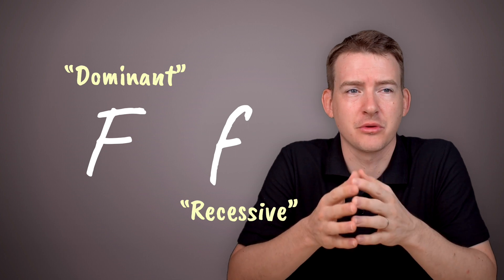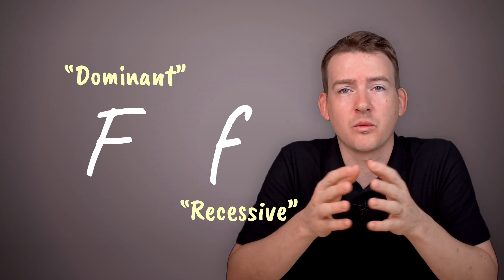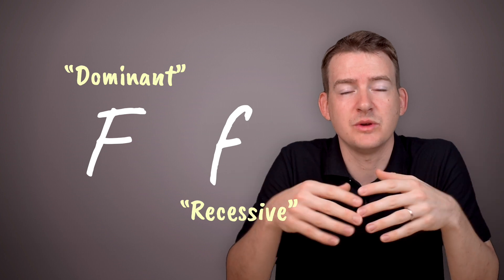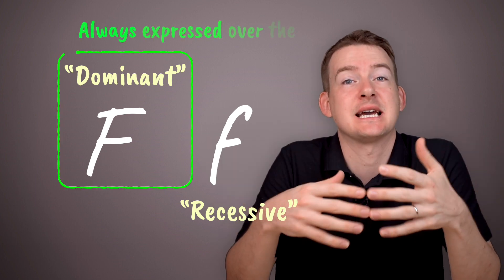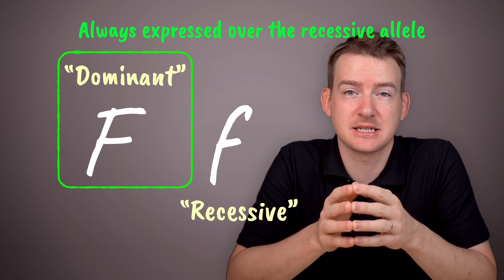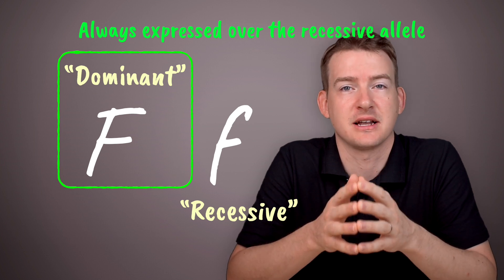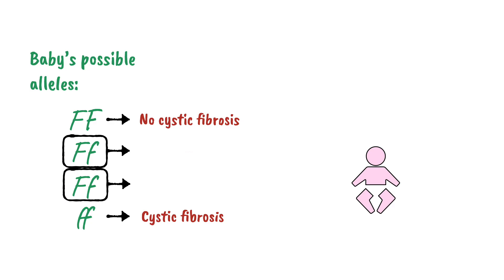If a person inherits both the dominant and the recessive one, only the dominant one will have any effect. We would say that only the dominant one is expressed. And by the way, we always use the uppercase letter to represent the dominant allele, and the lowercase letter to represent the recessive allele. So if a person inherits two alleles, only the dominant one will be expressed. Babies that inherit these alleles would not have cystic fibrosis.